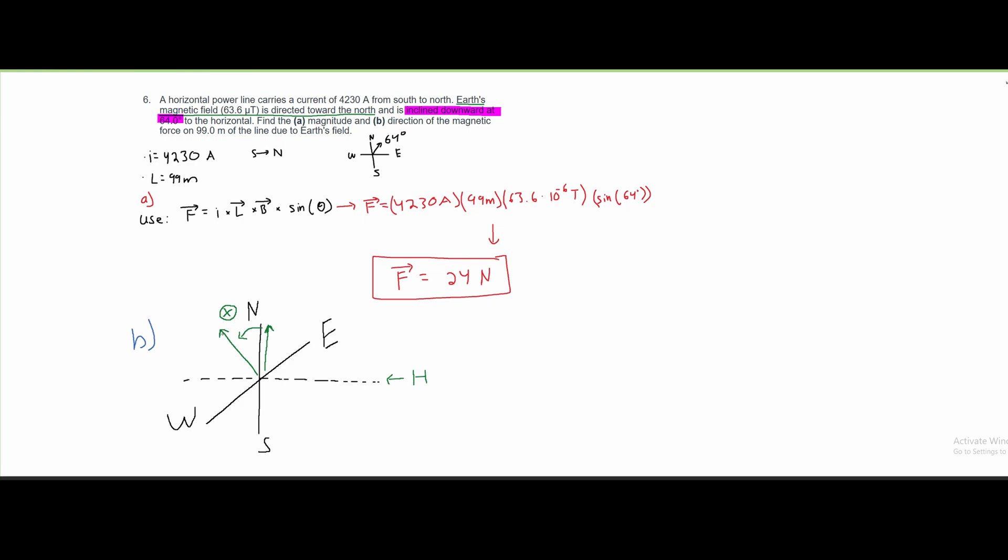X means that it is going into the page. And since it's going into the page, if we look at our 2D graph, the north, east, south, and west, we are going to see that basically our angle is going to be going up and then down into the page. Kind of like this.